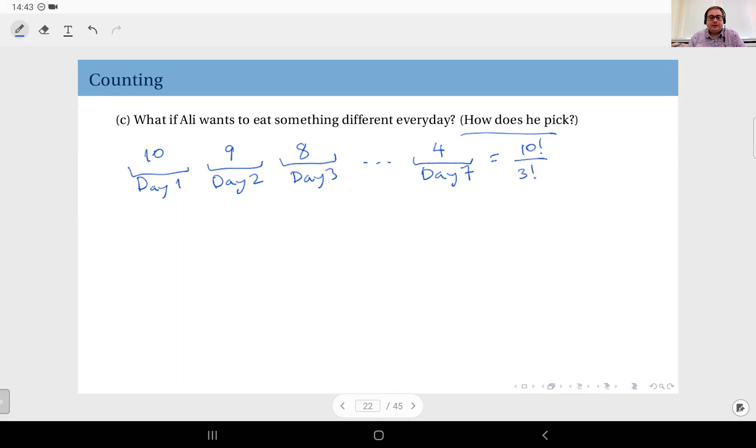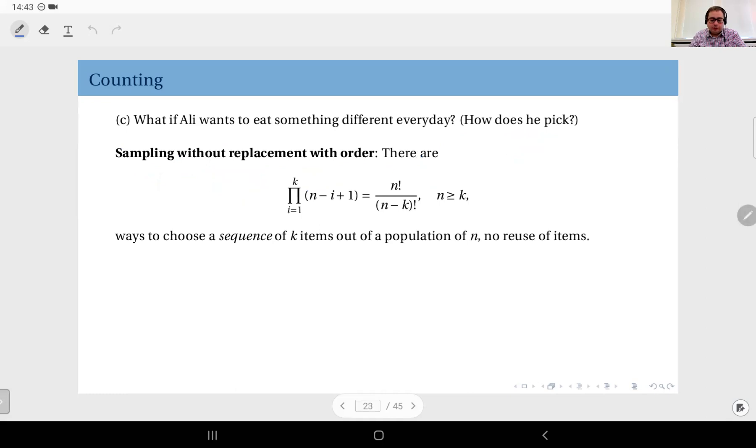So that we call sampling without replacement. So repetition is disallowed but with order, we still care about the order.